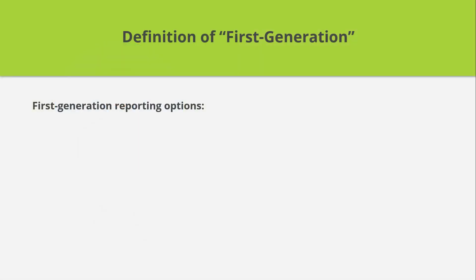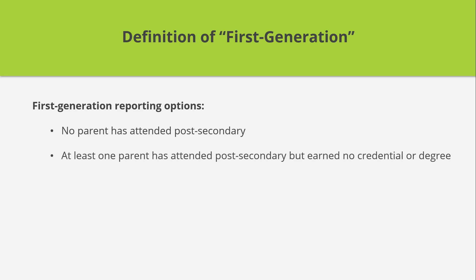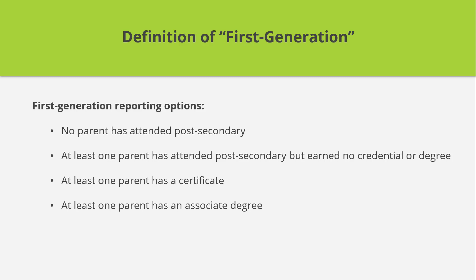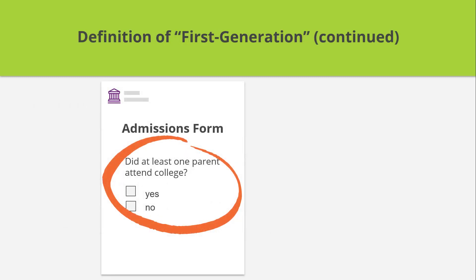First-generation status indicates whether either of the student's parents has completed a certificate or higher credential at a postsecondary institution. There are five categories: no parent has attended postsecondary; at least one parent attended postsecondary but earned no credential or degree; at least one parent has a certificate; at least one parent has an associate degree; at least one parent has a bachelor's degree or higher. However, in our institution's data systems, first-generation status is collected through an admissions form asking if the student has a parent who attended college, with answer options of yes or no. Prakash notes that the PDP has accounted for this and suggests reporting N if neither parent has a degree and A if at least one has a degree.